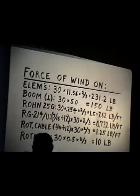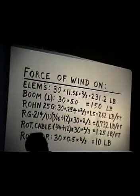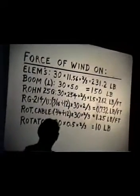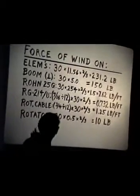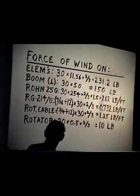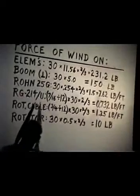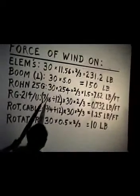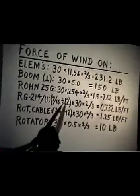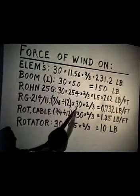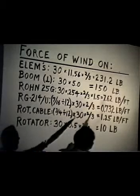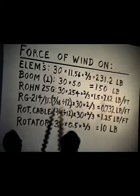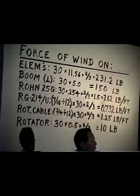In addition to the wind loading on the tower itself, we have to realize the tower will have some coaxial lines running up it, a rotor cable to operate the rotator, and the rotator itself at the top of the tower. For RG214U, which is 7/16 of an inch in diameter, divide that by 12 to convert to feet, times 30 pounds per square foot, times the two-thirds rounding factor because the coax is round. He gets wind loading on his coax of 0.732 pounds per foot.